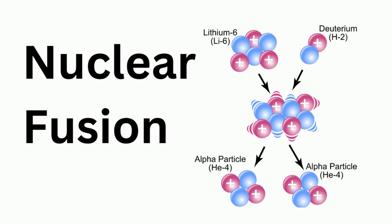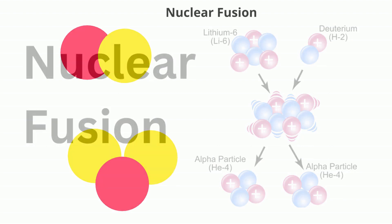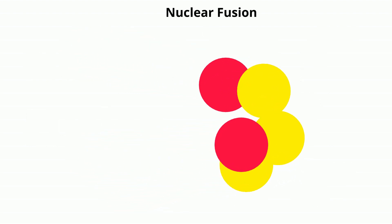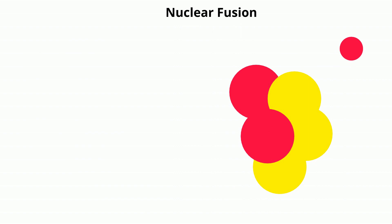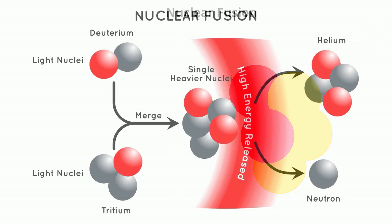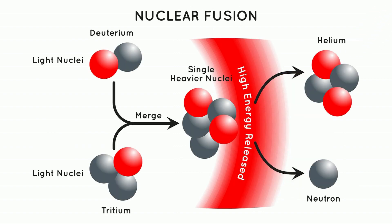On the other hand, nuclear fusion is the combining or fusing of two or more lighter elements into a larger one. For example, two isotopes of hydrogen — deuterium and tritium — can fuse and produce helium, giving off one neutron plus lots and lots of energy.